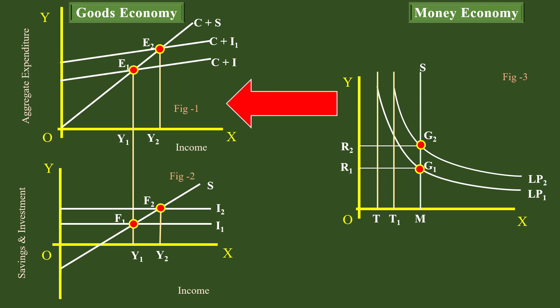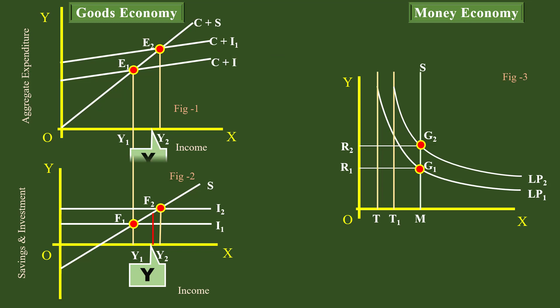This increase in interest rate naturally has an adverse effect on investment in the goods economy. It pushes the investment curve I2 downward, which in turn pulls down the aggregate demand curve. The final result is that the new equilibrium level of income will not be Y2, but less than that. This is how the money market also plays its role in determining the goods market equilibrium income. This interaction between the two markets is not there in the theory of income and output — this is a serious lacuna.